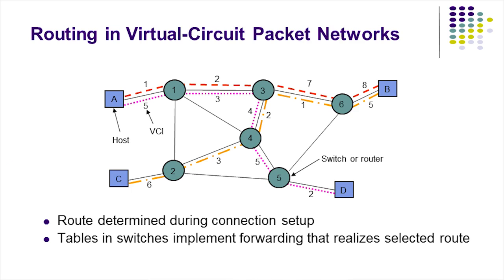In a virtual circuit packet switching network, the route is determined during connection setup. The virtual connection identifier (VCI) is local to the router. At each link, the identifier may be translated to a different identifier by label switching, depending on the available VCIs at a given link.